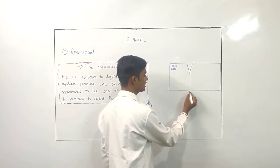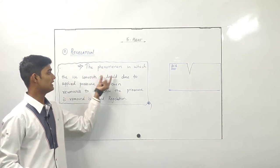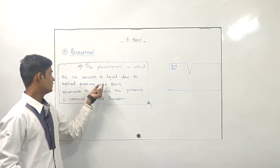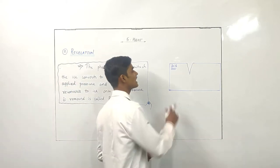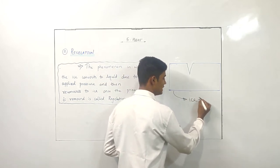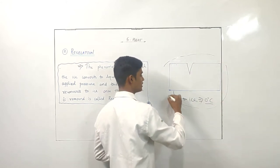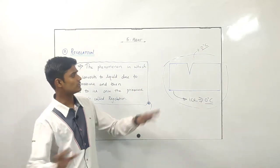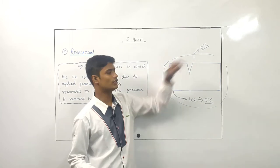Pressure हटा दिया। जैसे pressure लगाया तो ice liquid में convert हो गया। And then it re-converts to ice once the pressure is removed. अब वो वापस कैसे convert होता है? Simple सी बात है — यह ice है, इसका temperature कितना है? 0 degree Celsius। इसके आजू-बाजू का जो temperature है, वो भी 0 degree Celsius है — एकदम simple logic।